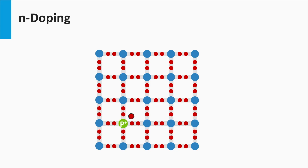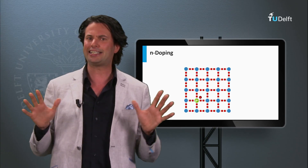First, we are going to intentionally put phosphorus impurities in the silicon network. Phosphorus has 5 valence electrons and will make molecular bonds with its 4 neighboring silicon atoms. Since the phosphorus atom has 5 valence electrons, it has 1 electron left over. This extra electron is easily excited to a free mobile state. The phosphorus atom left behind is no longer neutral and becomes a positively charged entity — this positive charge is fixed to the position where the phosphorus atom resides in the lattice. This is called N-doping.